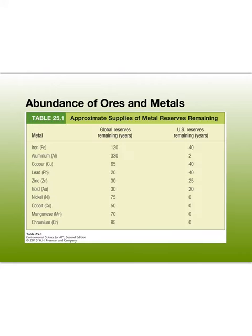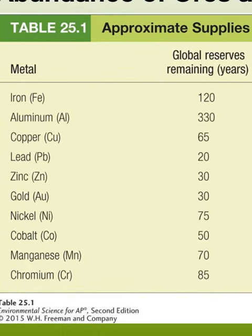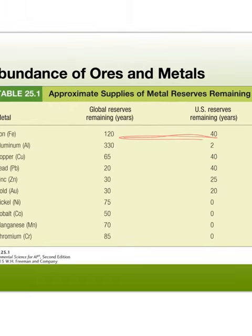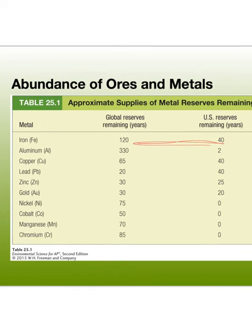Looking at global reserves — the estimated time in years we have remaining — iron has about 20 years globally, with the U.S. having about 40. Aluminum we have very little of, so we're having to import it constantly. However, we do have an advantage with lead, which we can actually export for economic gain.